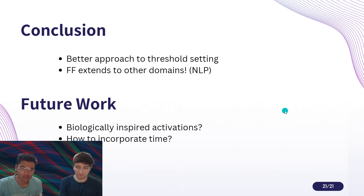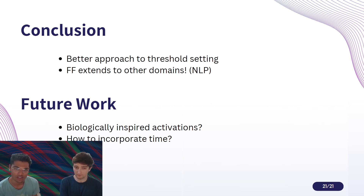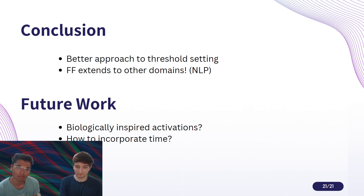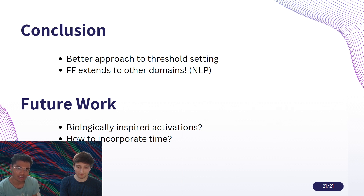So where do we take this from here? We've been able to tweak the threshold for better performance and move into different domains like NLP. Two important directions for future work: first, making the activation function also biologically plausible — we have some negative results in this domain and believe it's an exciting area. Lastly, the brain learns over time, but backpropagation through time is especially implausible, so figuring out how to use the forward-forward network in a recurrent manner is also an important direction. That's our presentation — thank you for listening.